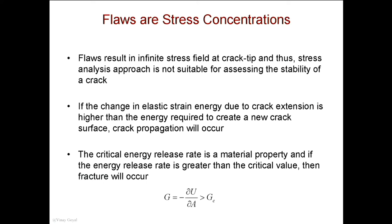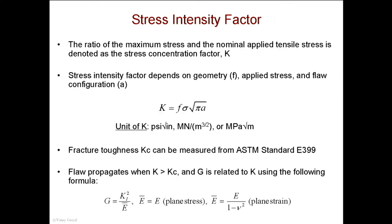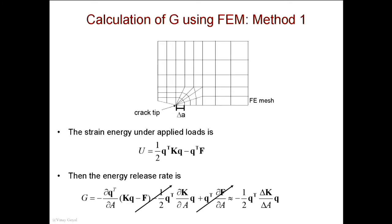You can calculate G in Abaqus using several different methods — I'll show you two here. The strain energy under applied loads has already been covered: the strain energy is basically the displacements of the whole system transposed times the whole stiffness matrix of your finite element model times q, minus q transpose F. Abaqus gives you this value for the whole model.